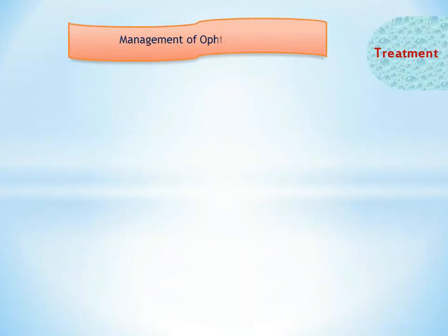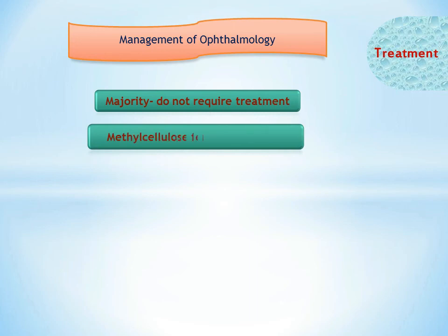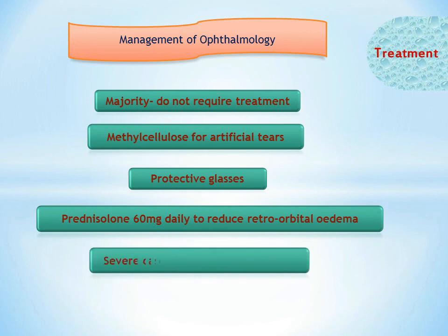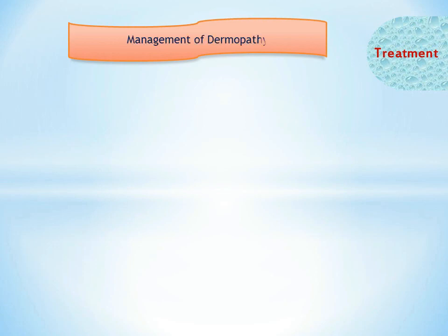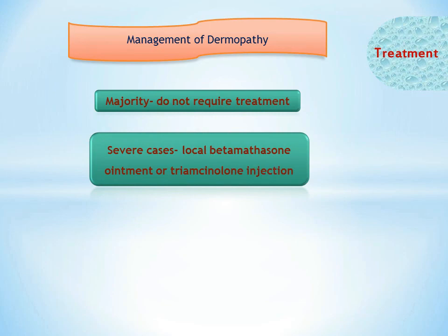Management of ophthalmopathy: the majority of patients do not require any treatment. For symptomatic patients, methylcellulose is used as artificial tears to avoid dryness of the cornea. Protective glasses and prednisolone 60 mg daily are used to reduce retroorbital edema. In severe cases, orbital decompression may be done. Management of dermopathy: majority do not require treatment; in severe cases, local betamethasone ointment or triamcinolone injection may be used.